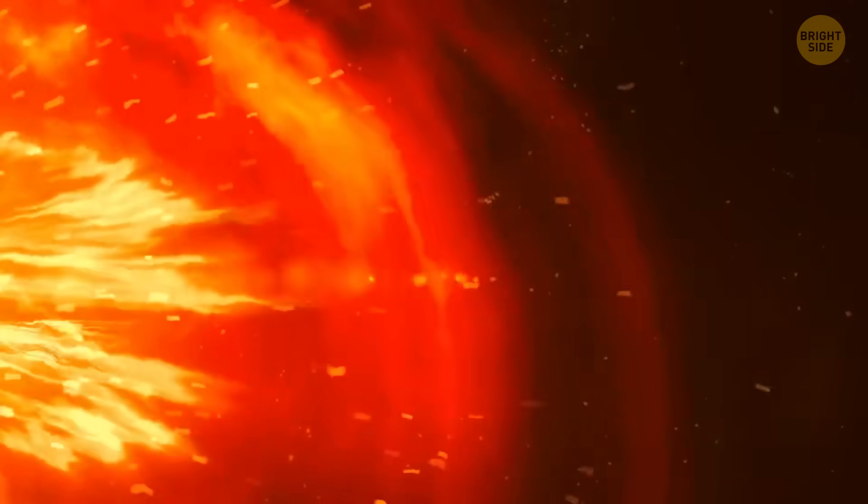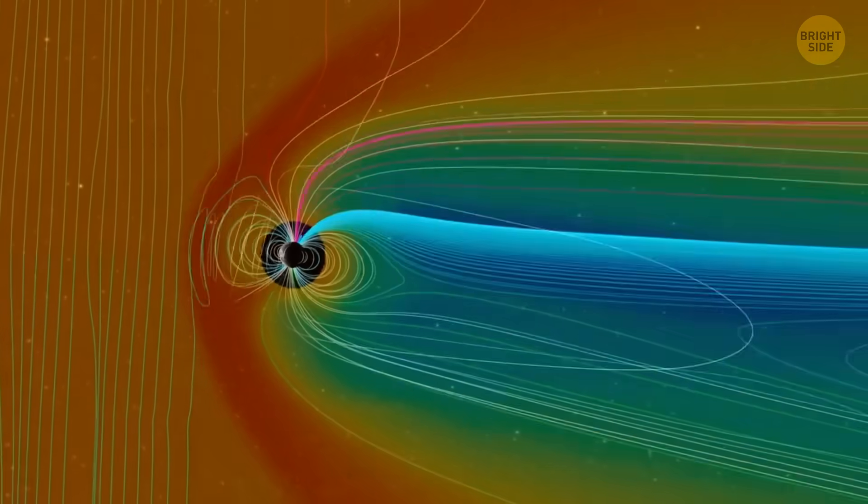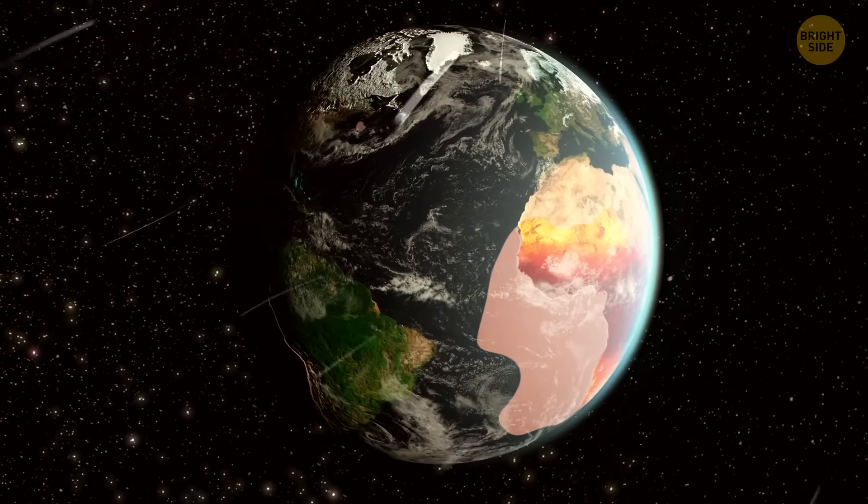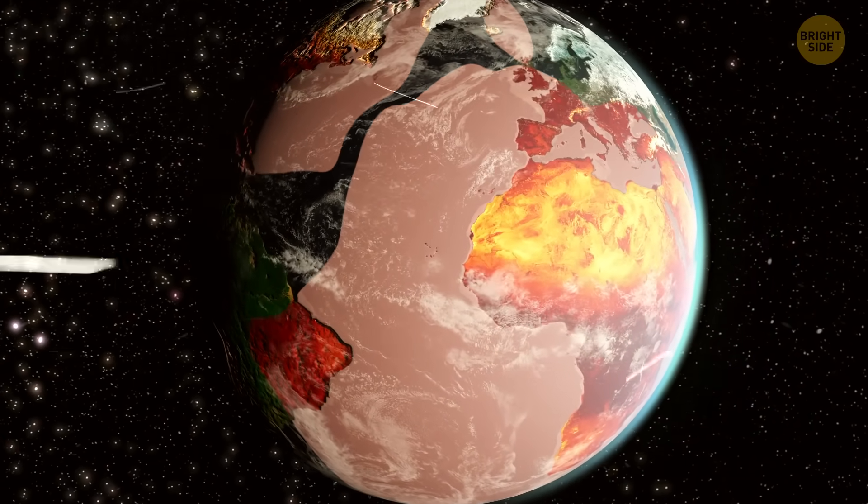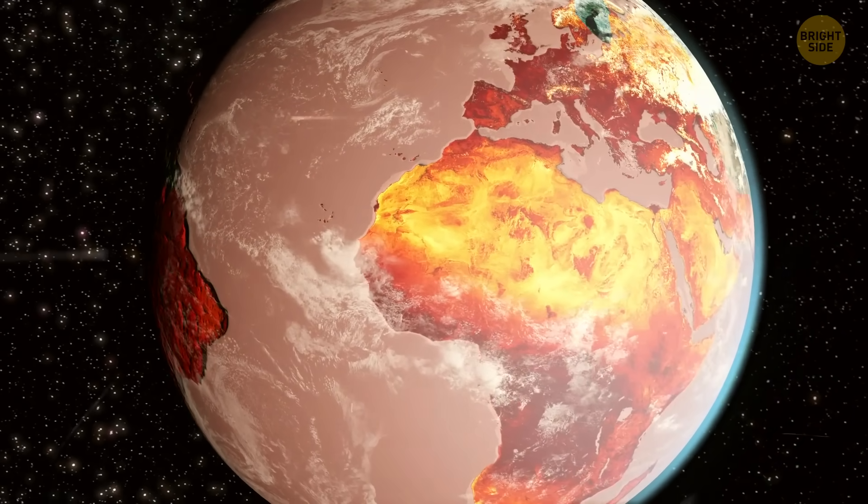Without the magnetic field, cosmic radiation would start hitting Earth's surface. These high-energy particles from the Sun would interact with the oxygen and nitrogen in our atmosphere, damaging the ozone layer. This would allow even more radiation to reach Earth's surface, causing even more damage.